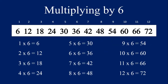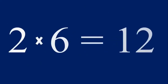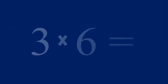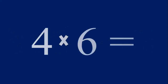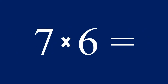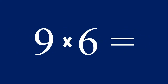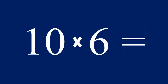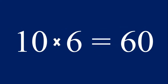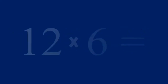Now let's practice multiplying the numbers one through twelve by the number six. One times six equals six, two times six equals twelve, three times six equals eighteen, four times six equals twenty-four, five times six equals thirty, six times six equals thirty-six, seven times six equals forty-two, eight times six equals forty-eight, nine times six equals fifty-four, ten times six equals sixty, eleven times six equals sixty-six, and twelve times six equals seventy-two.